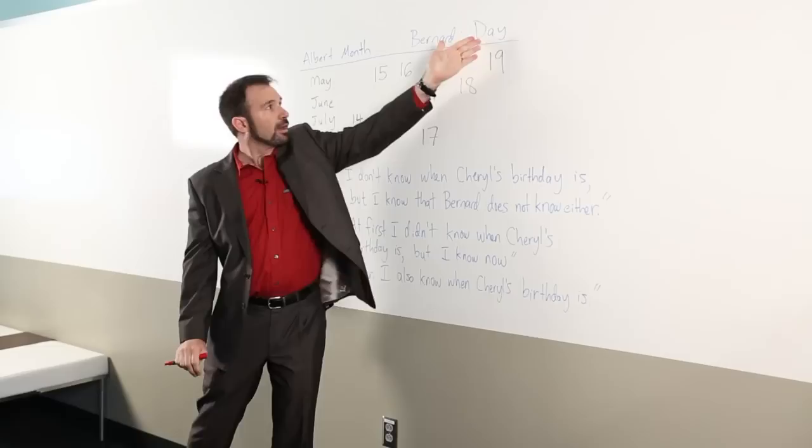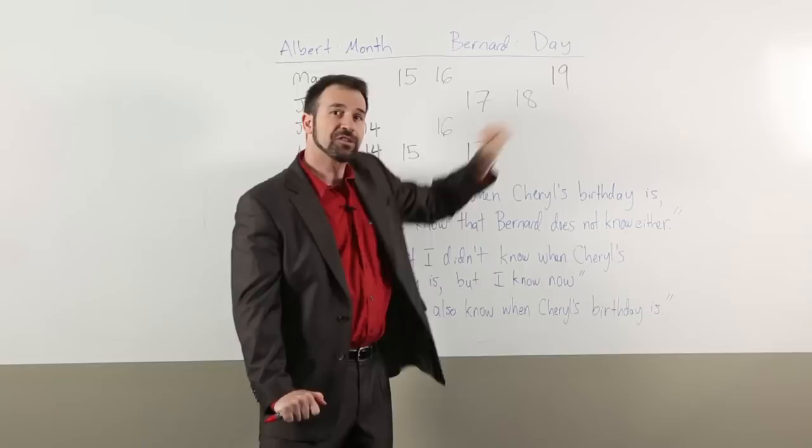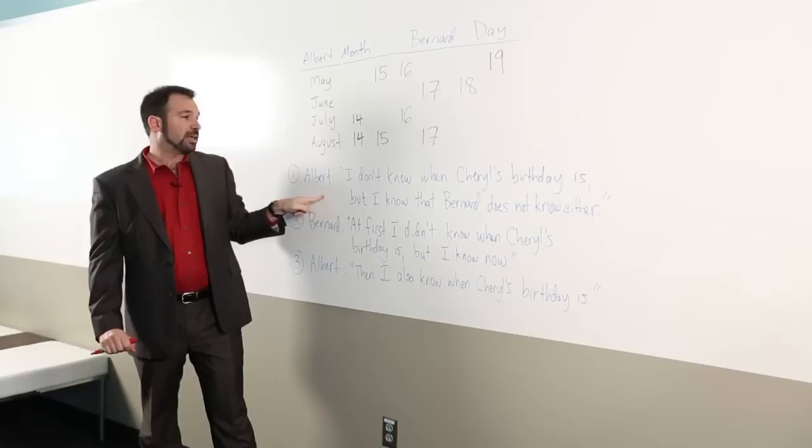Why? If it were the 19th, for example, then Bernard would know the exact birthday because there's only one 19 in this table. Therefore, it can't be the month of May either.